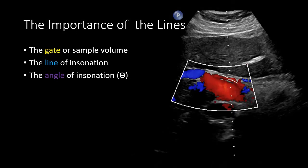Now let's look at a spectral wave Doppler ultrasound image and discuss the importance of the different lines or markings on the image. First, we have the gate or the sample volume. When we are doing spectral wave Doppler ultrasound, we are only measuring the frequency shifts that are occurring within that small gate or small field of view. That gate is adjustable — we can make it wider, we can make it broader — but it should fit nicely within the vessel of interest and hopefully be centered within that vessel.